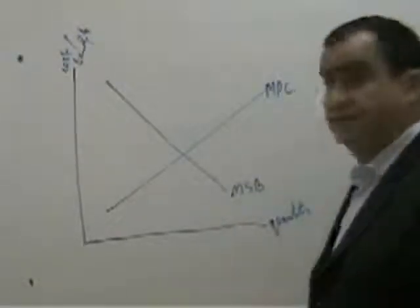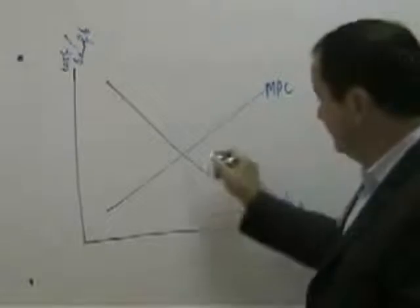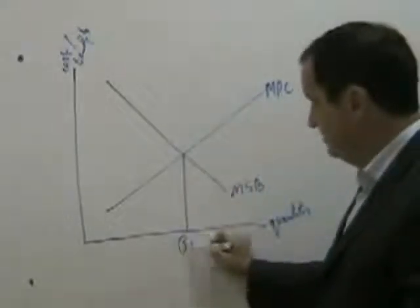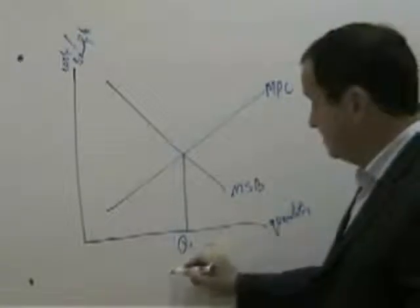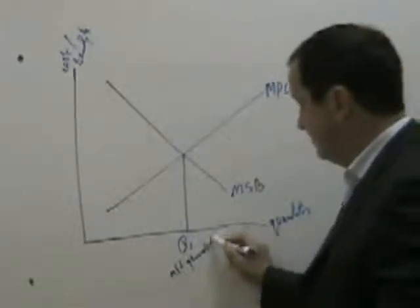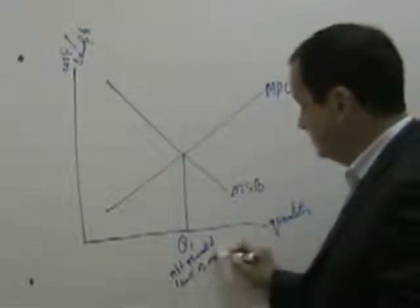The marginal private costs, upward sloping, creates an equilibrium point here, Q1, which represents the market generated level of output.